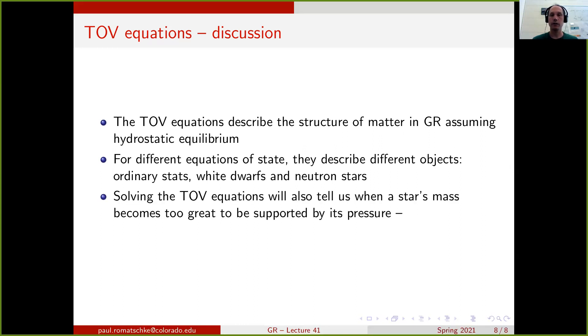If we go ahead and solve the TOV equations, it will tell us when a star's mass becomes too great for its pressure to support against its own gravity, such that if the star becomes too massive, the star will no longer be stable and it will collapse into a black hole.